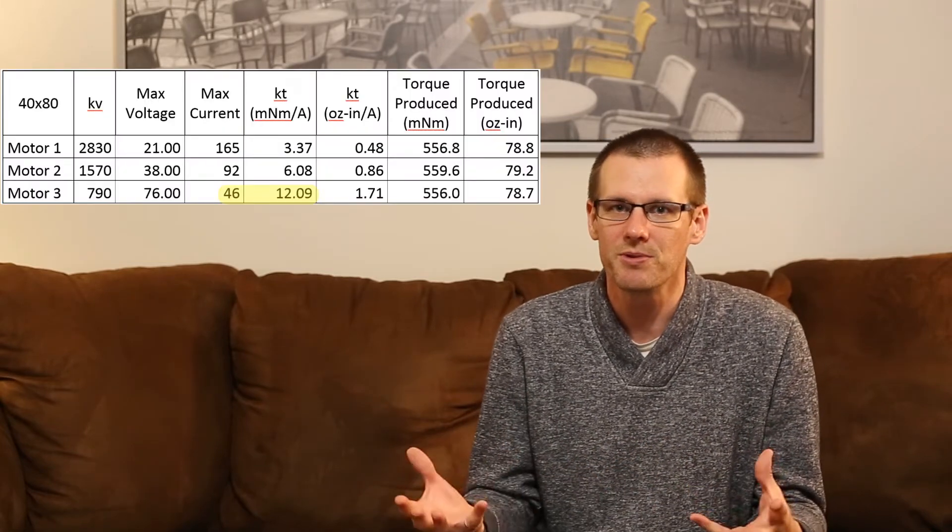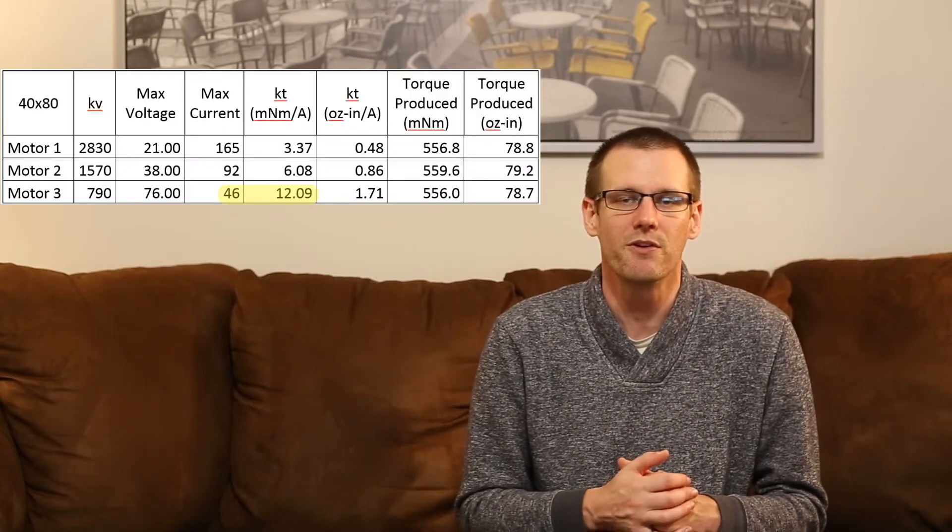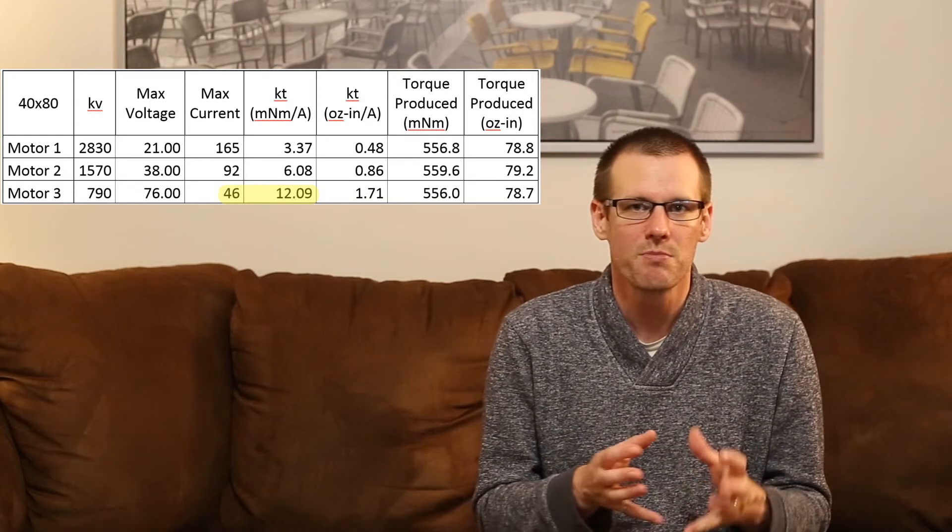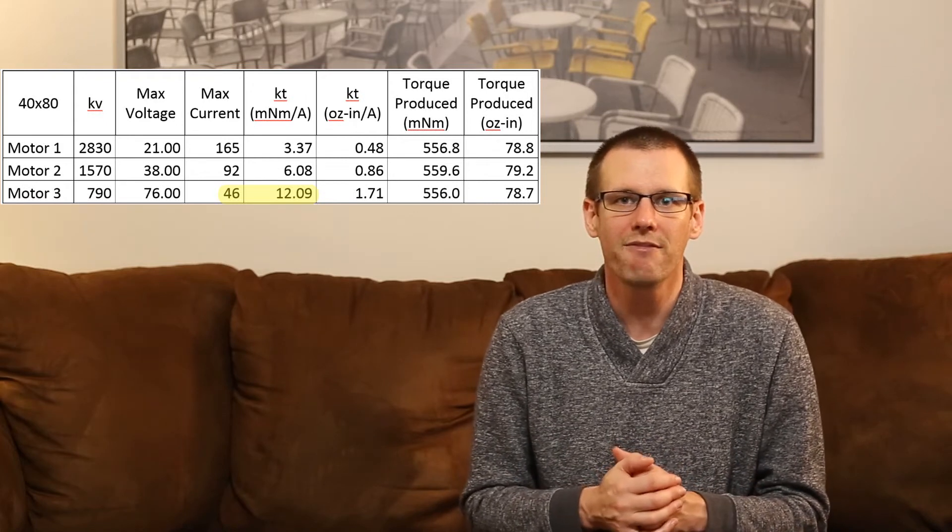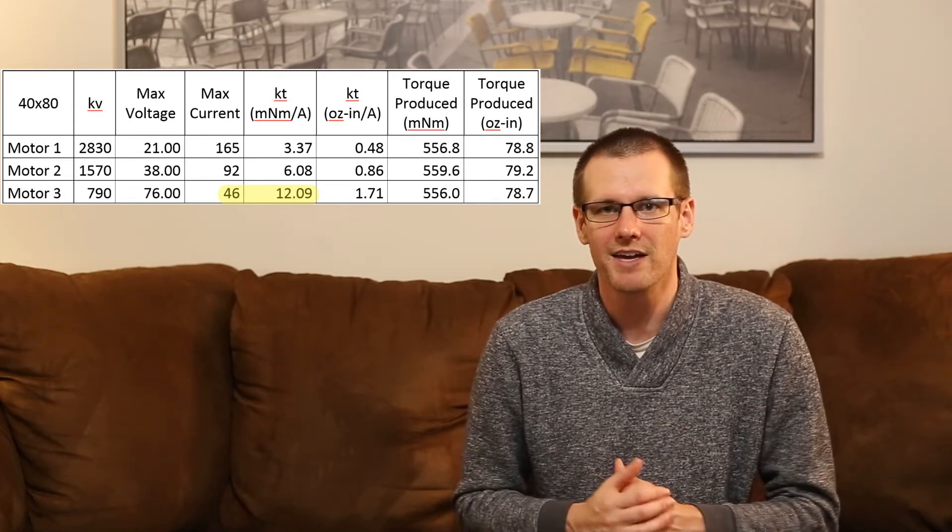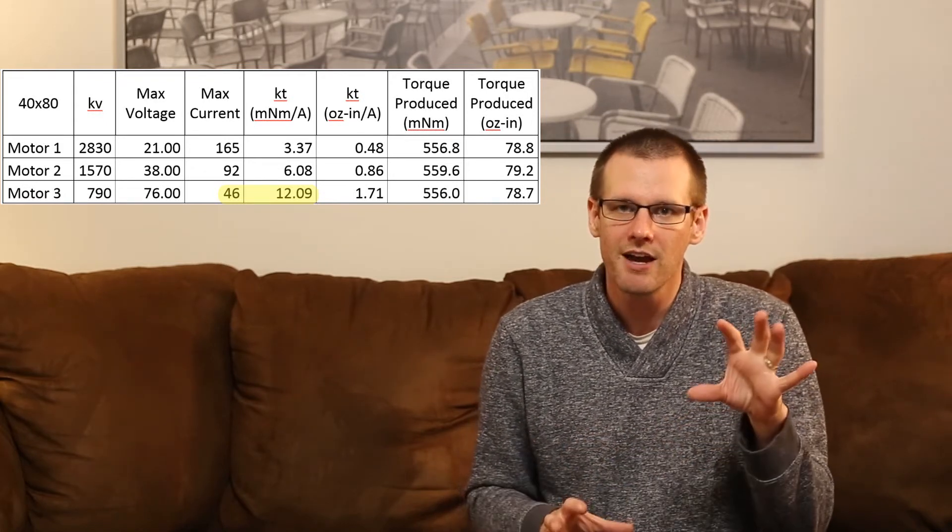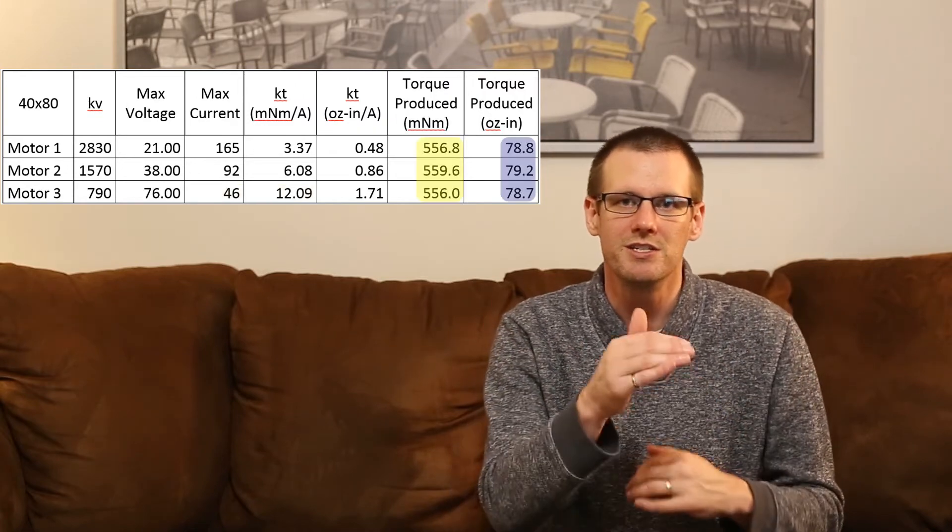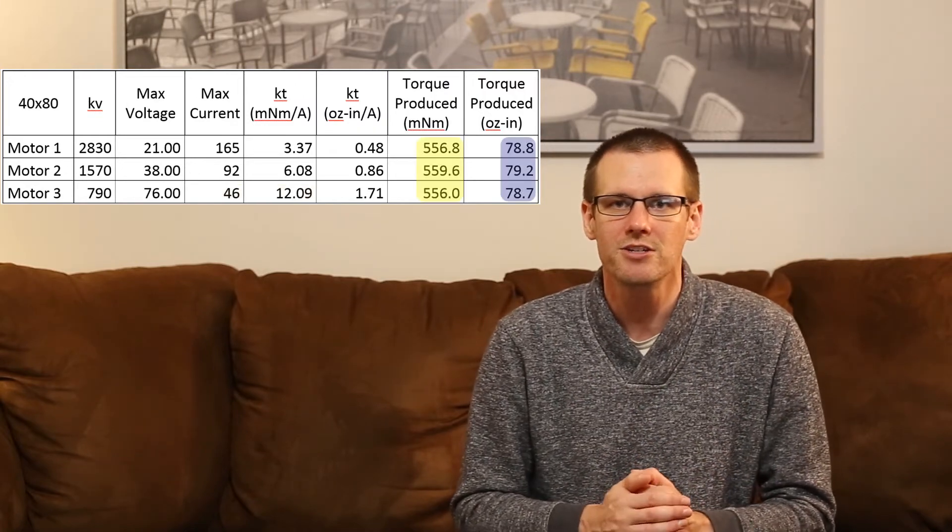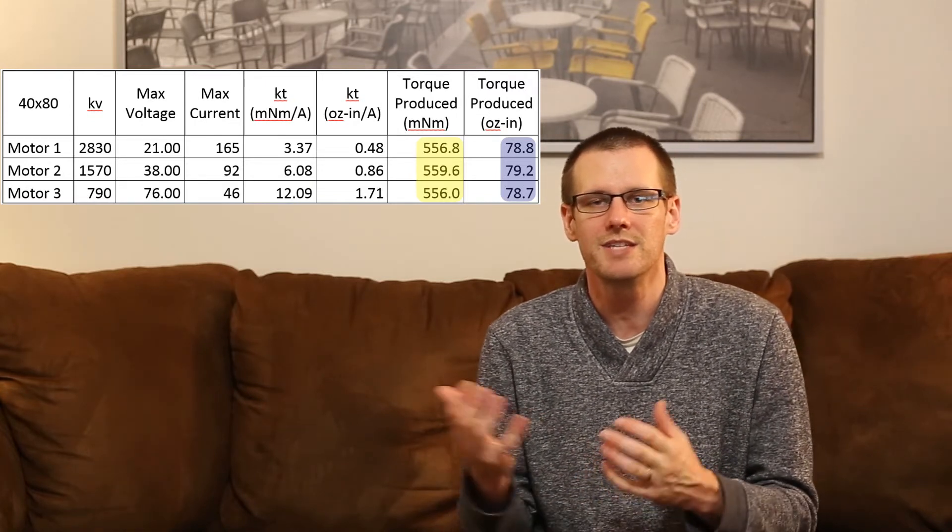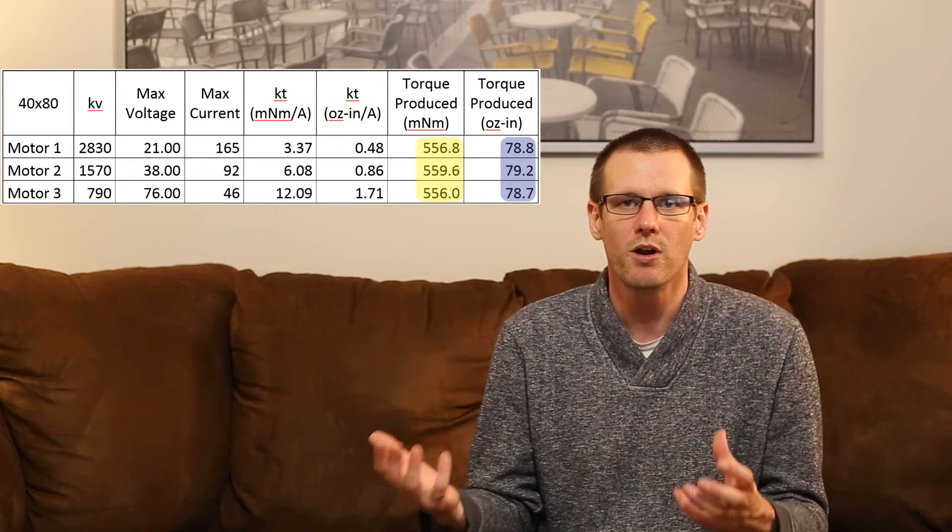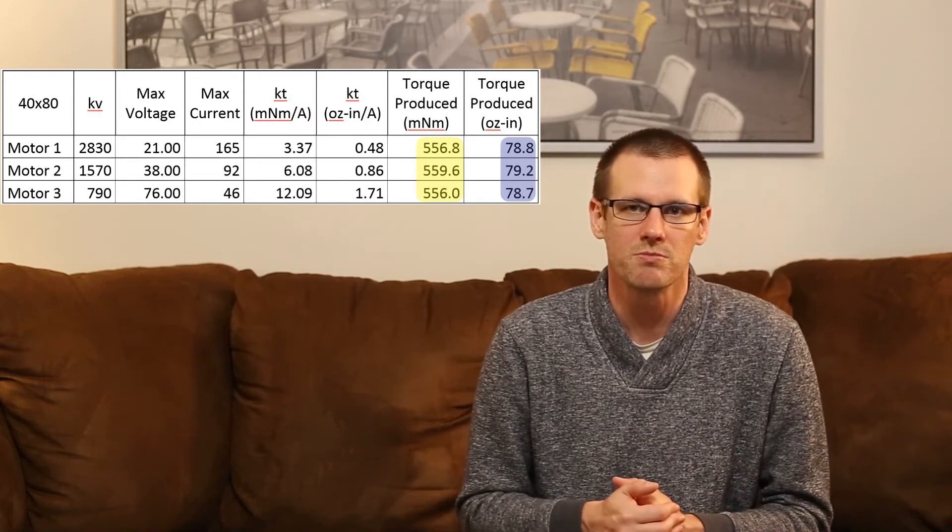Same with our motors with lower KVs. They are also able to produce a ton of torque, but it's for a different reason. It's because we have a small amount of current able to pass through those low KV motors, but they have a high KT value. So overall, you can see how these numbers are kind of changing. As we decrease in KV, we are actually increasing in KT, which is our torque constant. Therefore, we can get the same amount of overall torque produced from our brushless motors.